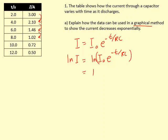Simplifying further, we get ln(I) = ln(I₀) - (1/RC)t.